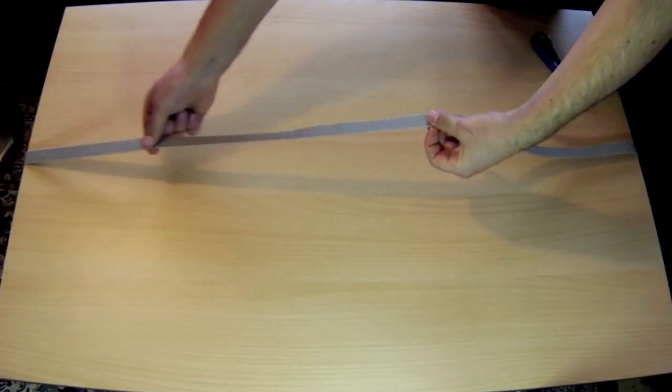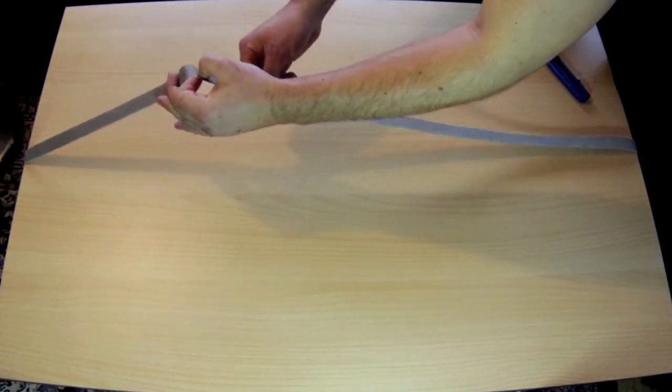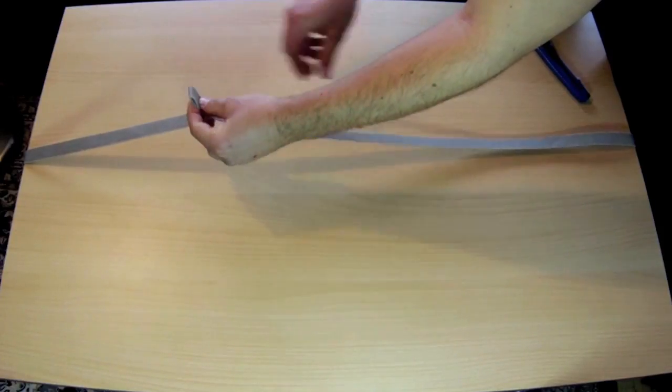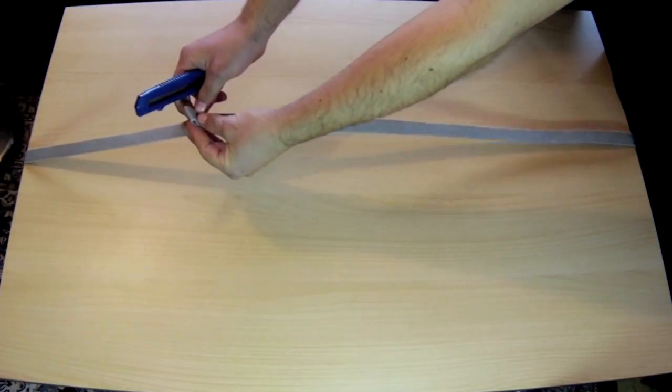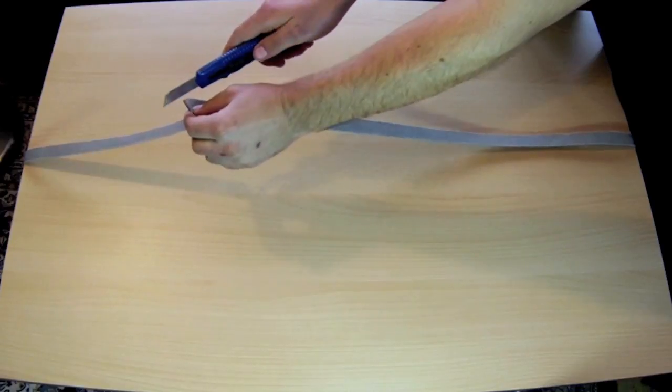This video is a step by step instruction on how to knot a new roller shutter strap onto the existing strap. This technique will also save you opening the head box of the roller shutter.